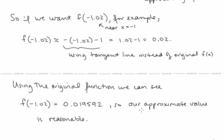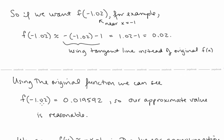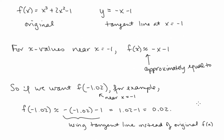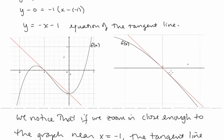To compare our approximation to the actual value, plugging negative 1.02 into the original function f gives 0.019592, so our approximation of 0.02 is very reasonable. We say f of x is approximately equal to negative x minus 1 — this is the linear approximation to f of x near x equals negative 1, also called the linearization of f of x at x equals negative 1. It's very important that we only use this approximation for x values near the point of tangency.